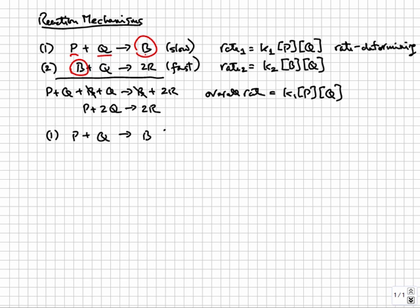Next, we consider a second mechanism: one, P plus Q going to B which is slow, and two, B plus Q going to P plus 2R which is fast. If you write down the overall reaction for this mechanism, you find that it is 2Q going to 2R or simply Q going to R.